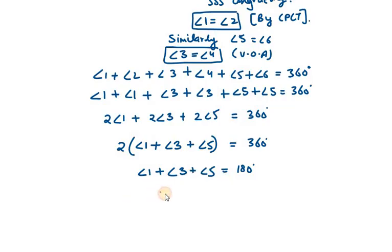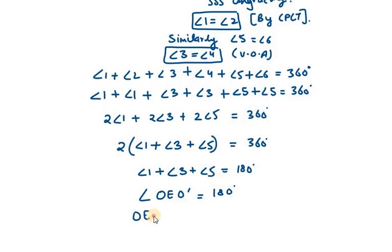So what do we understand? That our line OEO' makes an angle of 180 degrees. Therefore, we can say that OEO' is a straight line, meaning that points O, E, and O' are collinear.